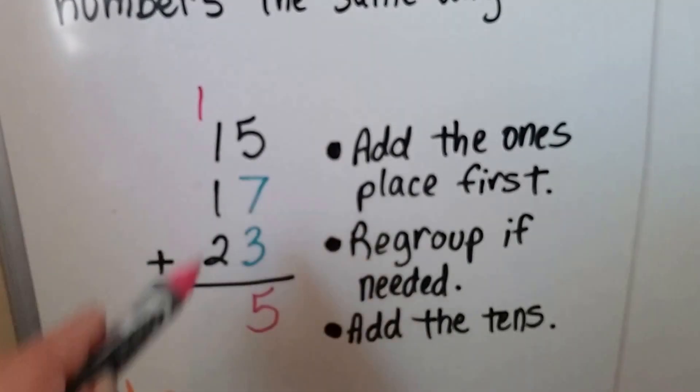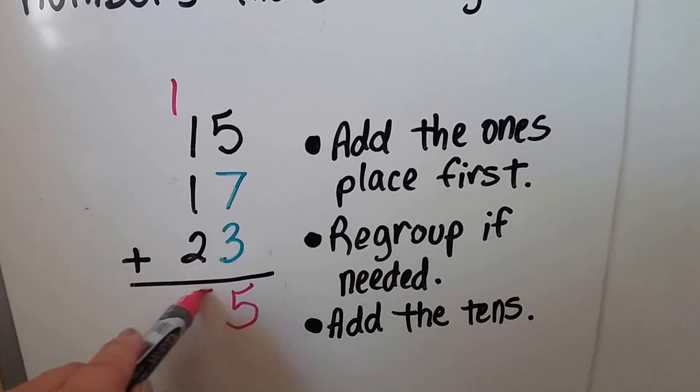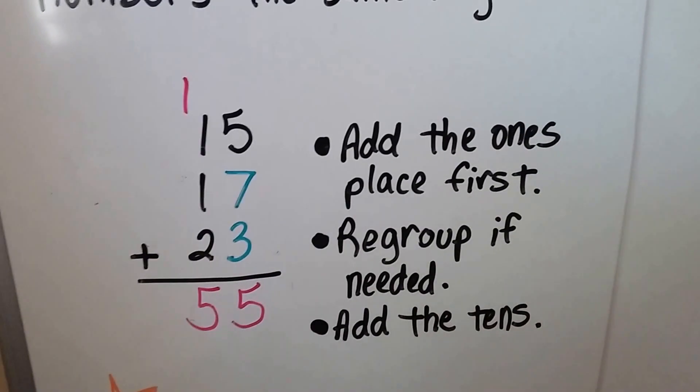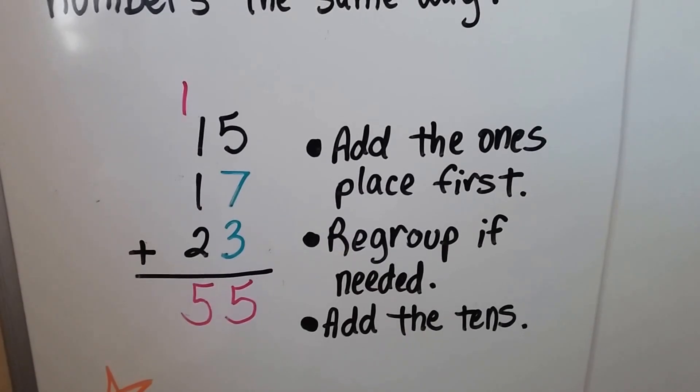We regroup the 1 from the 15 to the tens column and we put the 5 into the ones column. Now we just add the tens: 2, 3, 4, 5. 15 plus 17 plus 23 is equal to 55.